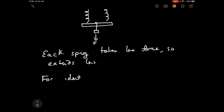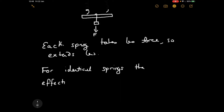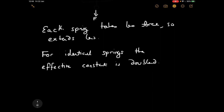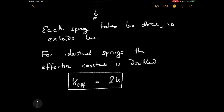For identical springs in parallel, each with spring constant k, the effective spring constant of the system is equal to two times k. If there were three springs, it would be tripled; four, quadrupled. The more springs you add in parallel, the less the system will extend because you're sharing the force over more and more springs.